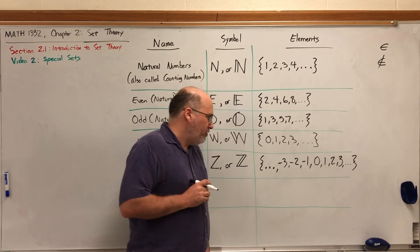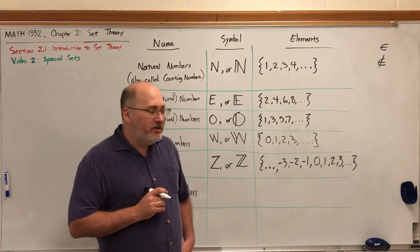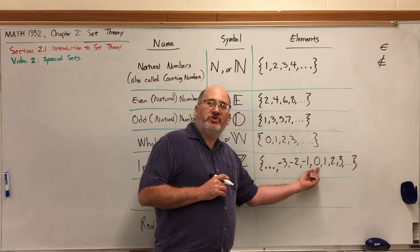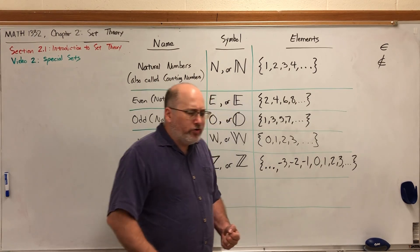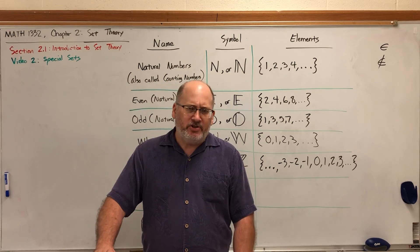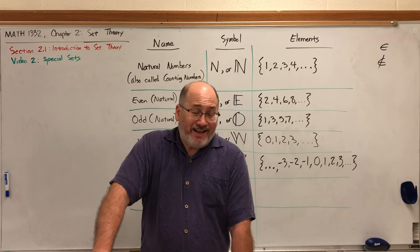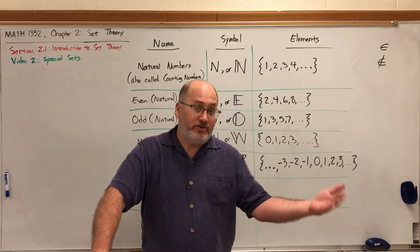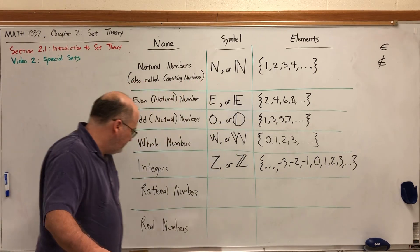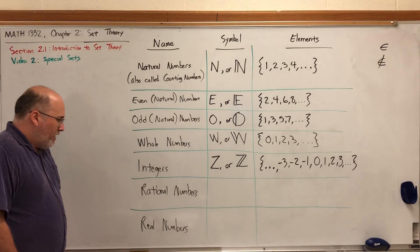If you're wondering where's negative zero, it's in there. Zero is the only number equal to its negative, so it would be redundant to write negative zero. When you're listing elements of a set, there's no need to list them more than once.